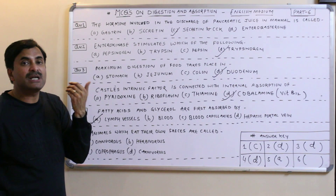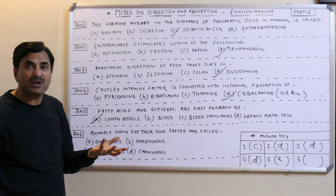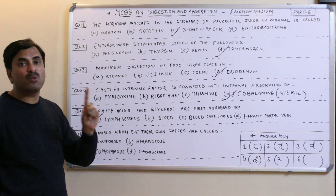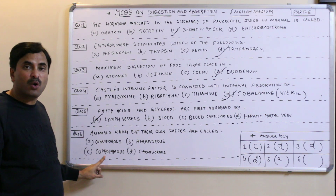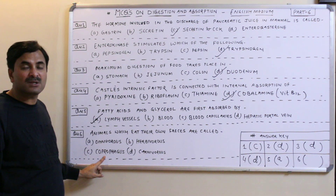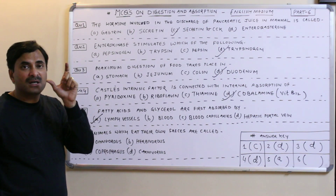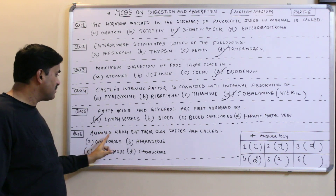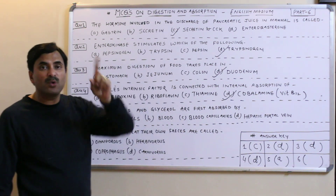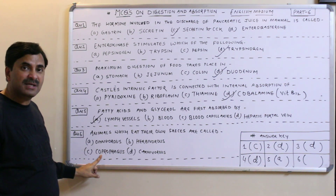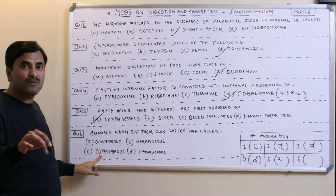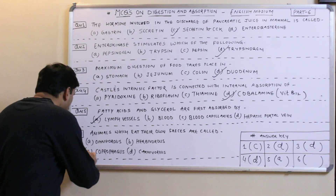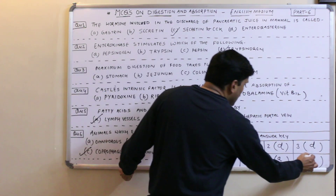Question number six: animals which eat their own fecal matter are called — always remember, animals which eat their own fecal matter are called coprophagous, and this phenomenon is called coprophagy. It occurs in the rabbit, which does this for the purpose of cellulose digestion. The answer to question number six is C — coprophagous.